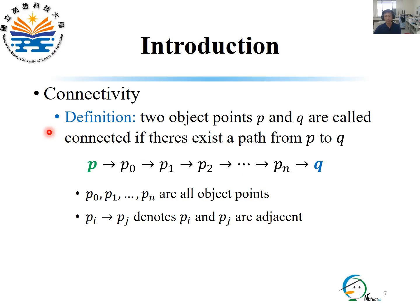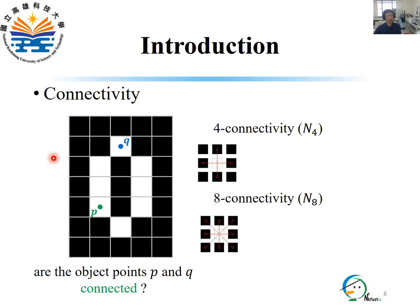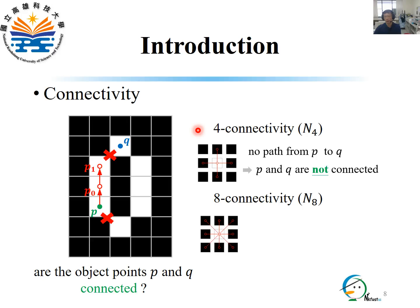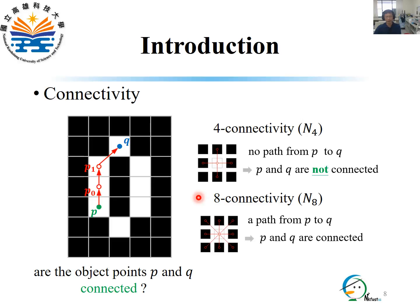For two points P and Q, they are called connected if there exists a path from P to Q, where points P0, P1 to Pn are all object points, and all pairwise adjacent points PI and PJ on the path are adjacent. In this example, we ask whether points P and Q are connected. For 4-connectivity, no path exists from P to Q, so they are not connected. But for 8-connectivity, there exists a path from P to Q, and they are connected.